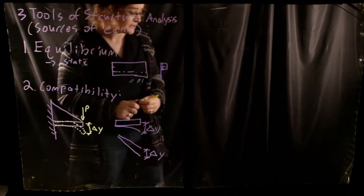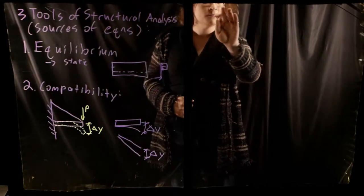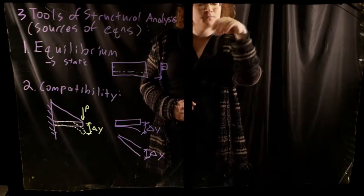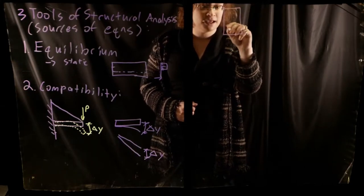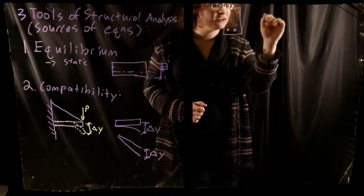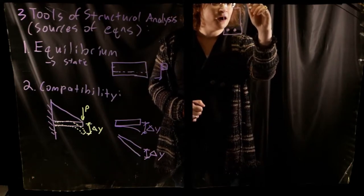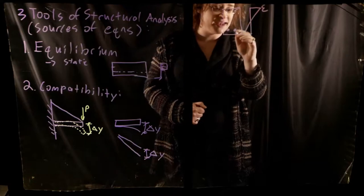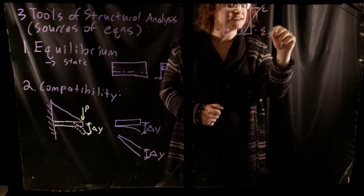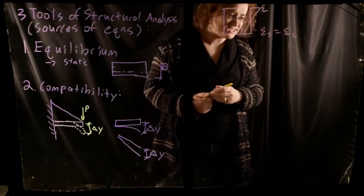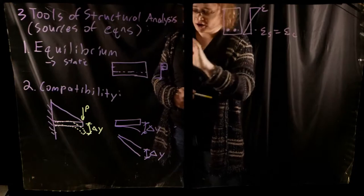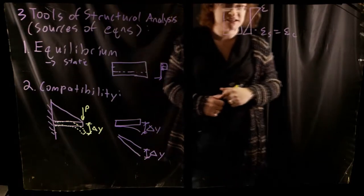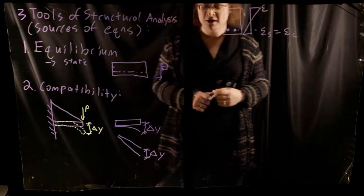Another example of compatibility would be something like reinforced concrete. When designing a reinforced concrete beam — with some rebar in the bottom — we assume a constant strain profile versus depth. In other words, we assume that at a given point, the strain in the steel is equal to the strain in the concrete. This is an example of compatibility. We assume the deformations are equal at one spatial location, and that helps us provide another equation that we can use in addition to our equations of equilibrium.